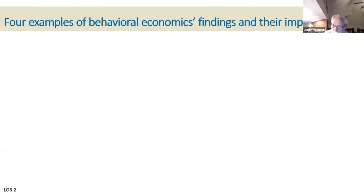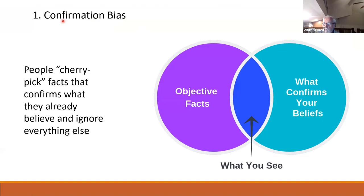Let me give you four examples of some findings and their implications. The book goes over some cognitive biases and talks about them, so let me give you four and show how these things work. Number one is the confirmation bias: people cherry-pick facts that confirm what they already believe and ignore everything else. People pay attention to the facts which confirm their beliefs, ignoring everything else — they're not using the scientific approach of going out to find the truth.